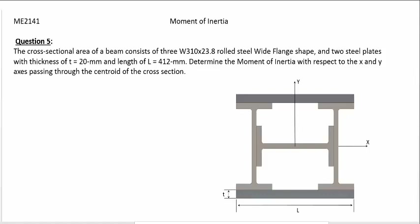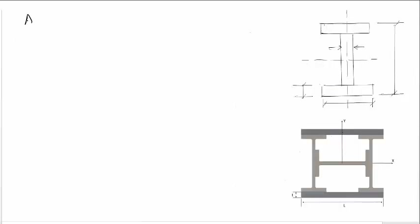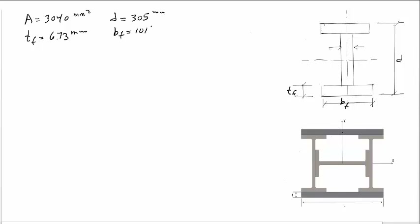First, we need to find the properties of profile W310 by 23.8 from the table. We get the following data: the area of the profile is 3040 mm squared; the depth D, or height of the profile, is 305 mm; and the flange thickness TF is 6.73 mm with a flange width BF of 101 mm.